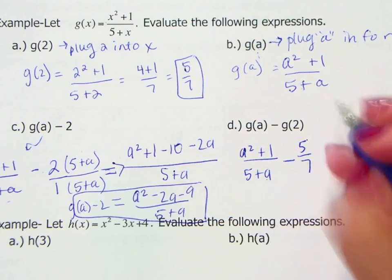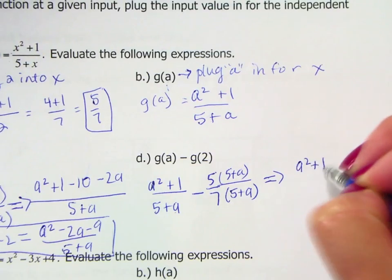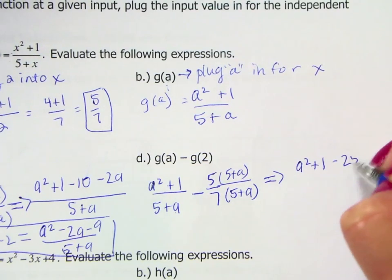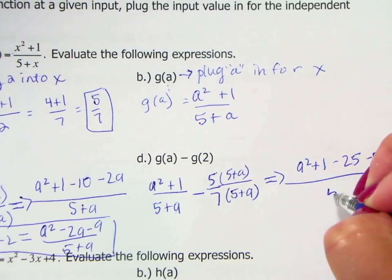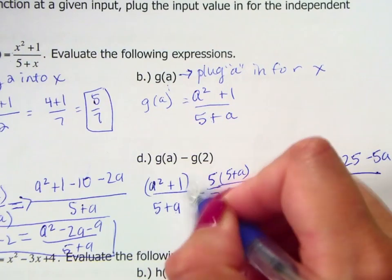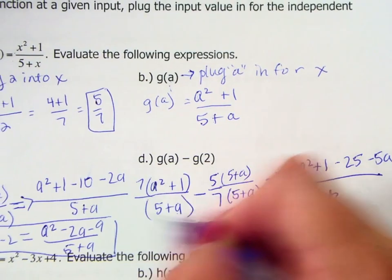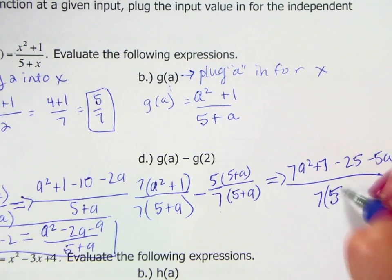Same thing on the last example, we can go ahead and make a common denominator. And I did not make a common denominator because there is a 7 here. So I need to multiply this whole first term by 7. Sorry about that. So that would be 7a squared plus 7. There we go. That looks a little bit better.